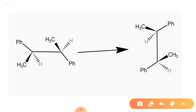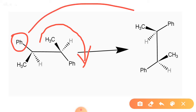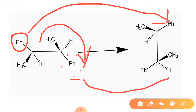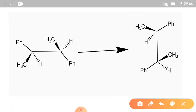In my another video, I will discuss about RS and DL nomenclature of these compounds. Now, if we rotate that flying wedge conformation in that way, then that phenyl group will go to the top and the below phenyl group will go to the down. And the other atoms are methyl groups and hydrogens.